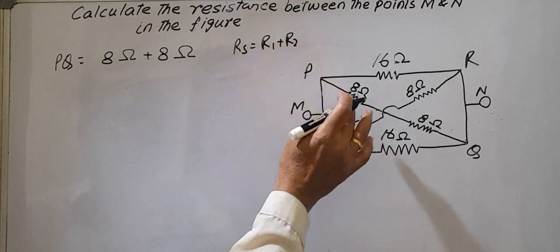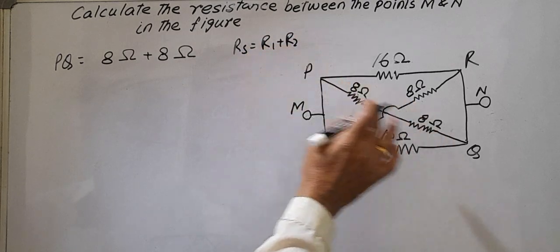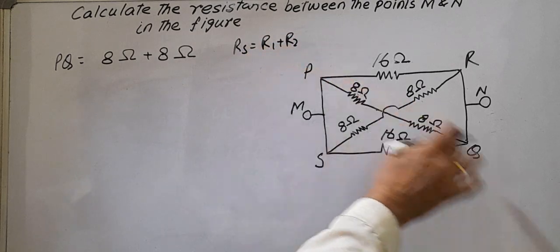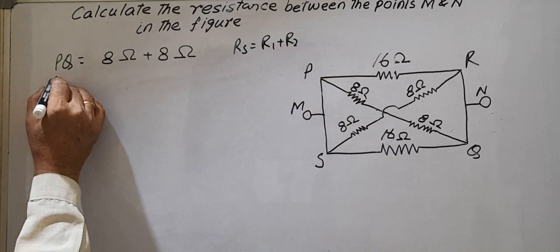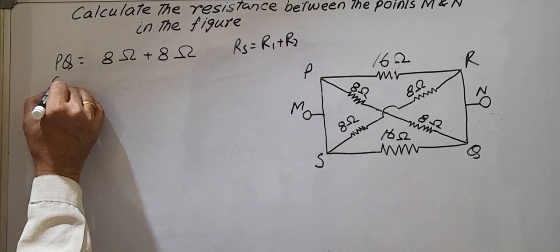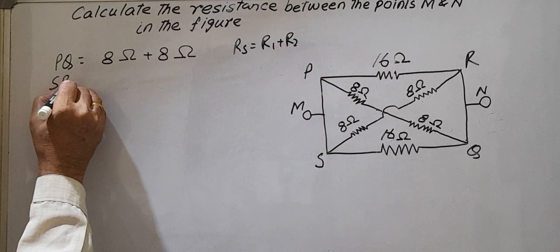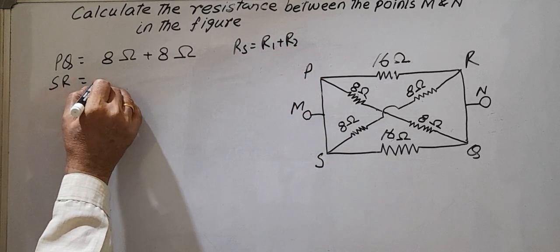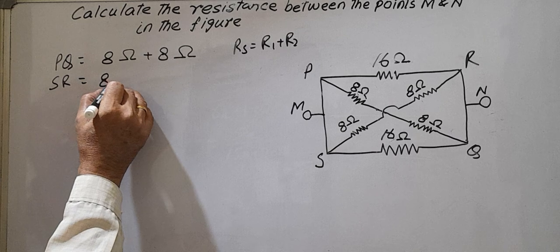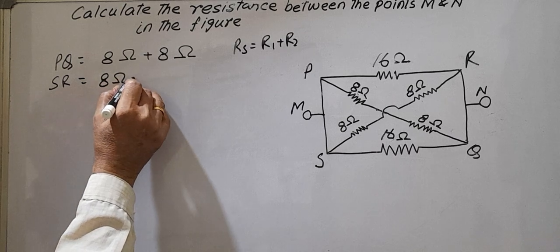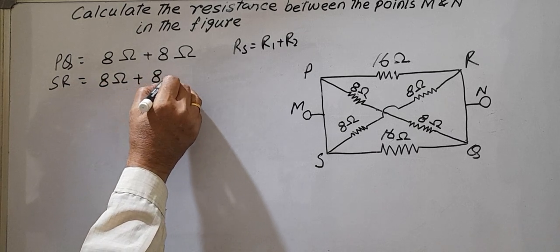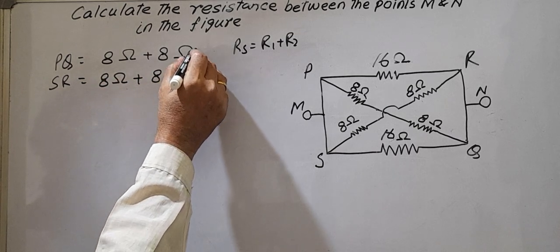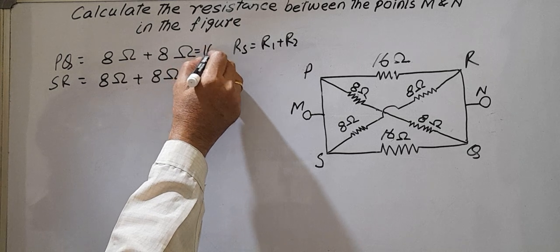Now for SR: SR equals 8 ohms plus 8 ohms. So both combinations are 16 ohms over here.